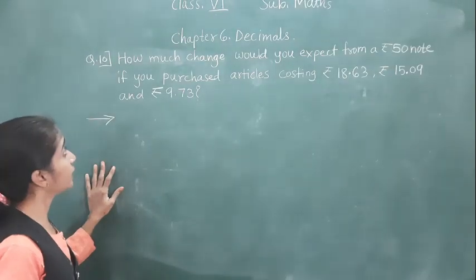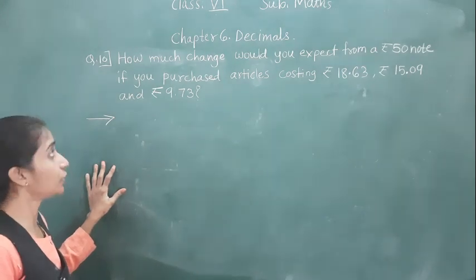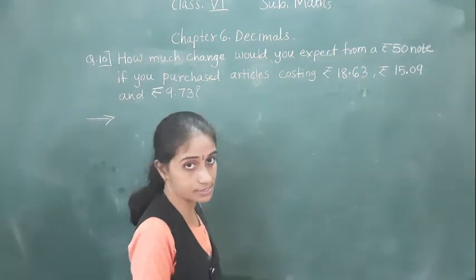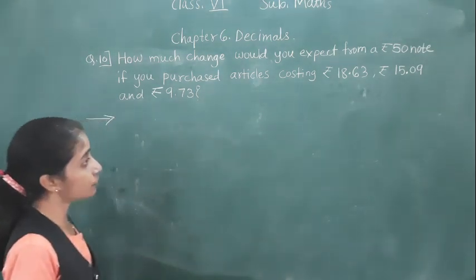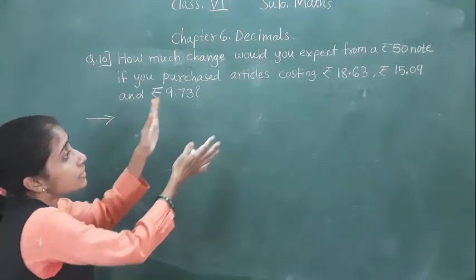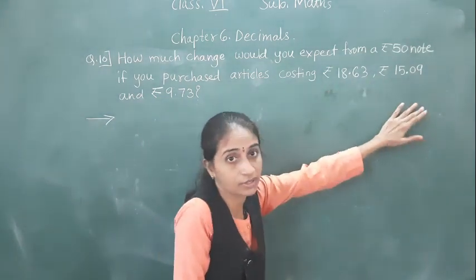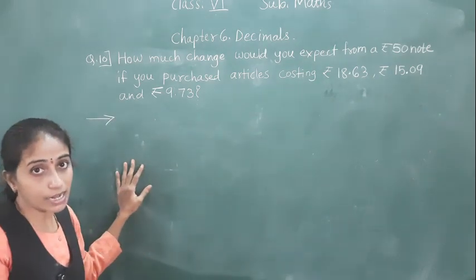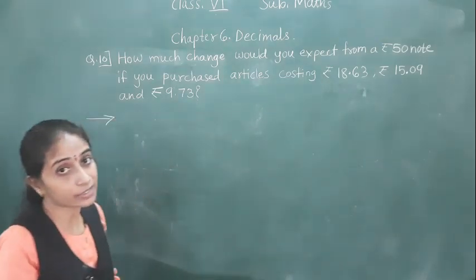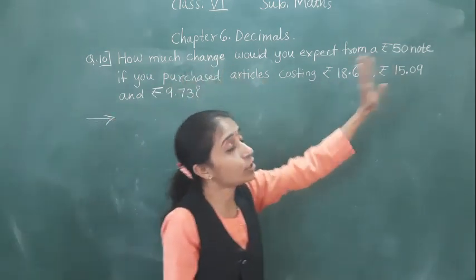Let's solve question number 10. How much change would you expect from a rupees 50 note if you purchase articles costing rupees 10.63, rupees 50, and rupees 973.50? Suppose I purchase these three articles — these are the costs for each article. So add them up to find how much I have to pay.